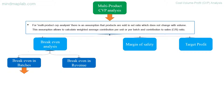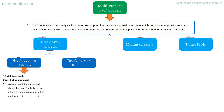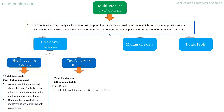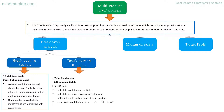Break-even in batches equals total fixed costs divided by contribution per batch. To find average contribution per unit, multiply the sales ratio by the contribution per unit of each product and add them. Units can be converted to money value by multiplying by sales price. Break-even in revenue equals total fixed costs divided by the CS ratio per batch. To find the CS ratio per batch, calculate contribution per batch and calculate average revenue by multiplying the sales ratio by the selling price of each product.